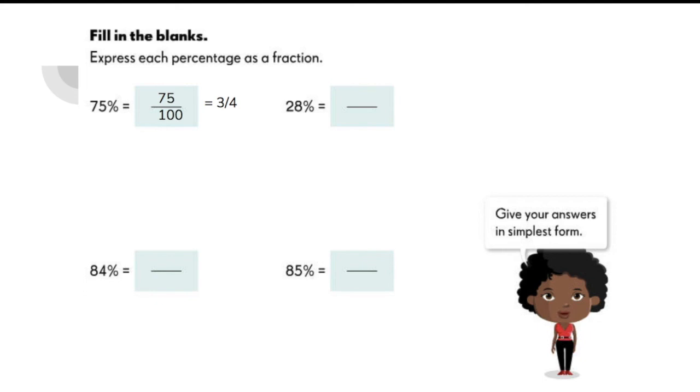Let's do this quickly. 75% is equal to 75 over 100 or 3 fourths. 28% is the same as 28 over 100. What is it in simplest form? It's 7 out of 25.